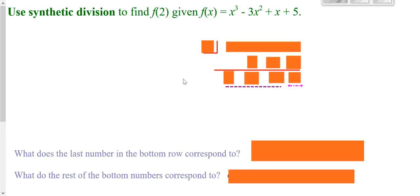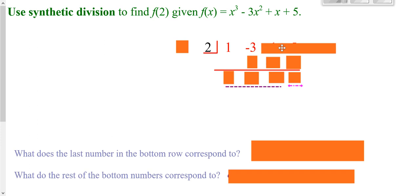Let's take a look at synthetic division. Suppose we wanted to go back and do f of 2 again. x is 2, so that's what goes in your half box. After your half box are just your coefficients — the numbers in front of your variables: 1, negative 3, 1, and then our constant. With synthetic division, we only do two things: we add and multiply. This plus nothing is still 1.